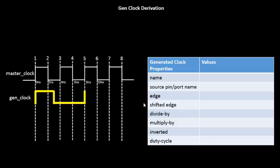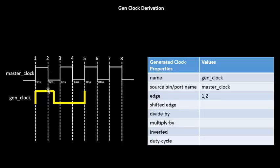Let's see what we have. We have the GenClock name and its source port pin. The name of the generated clock is gen_clock and its master is master_clock. The first rising edge of the GenClock is at the first edge of the master clock, so we put edge 1. Next, the first fall edge is closest to the second edge of the master clock, so we put edge 2. And the last — the second rising edge — is at the fifth edge of the master clock, so we put edge 5.